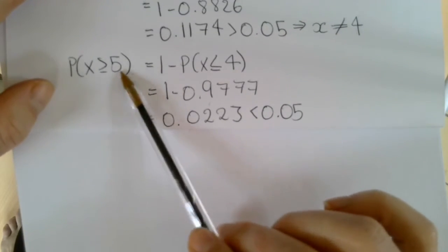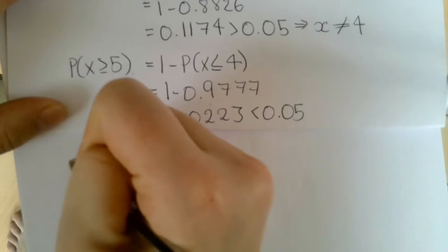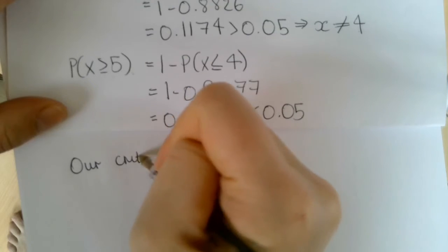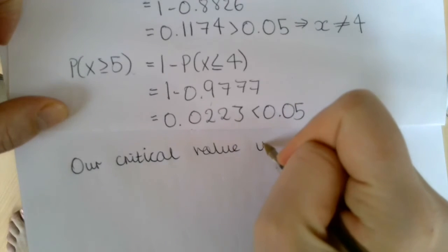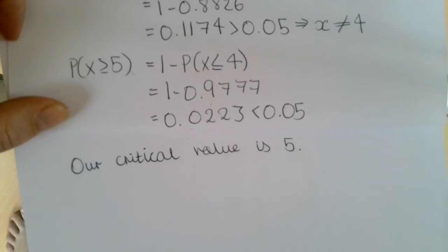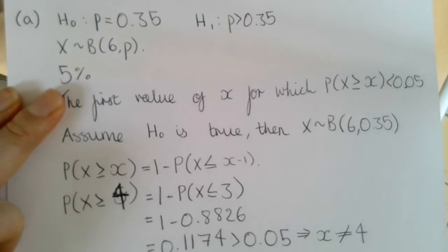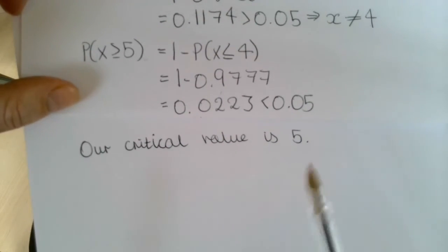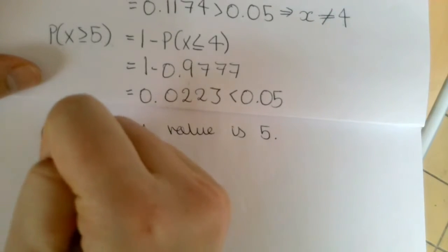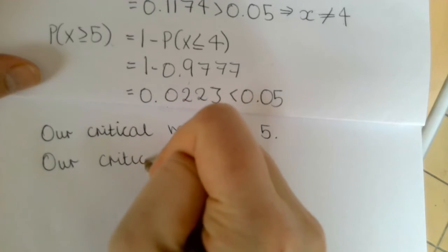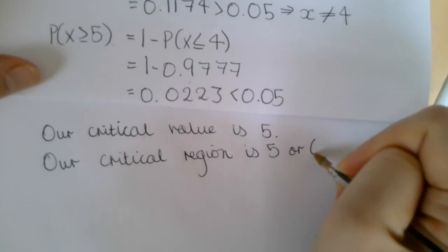We've found that the probability that x is greater than or equal to 5 is less than 0.05, which means our critical value is 5, because that's the first value of x for which the probability that x is greater than that value is less than 0.05. We've got a binomial distribution going up to 6, so our critical region is 5 or 6.